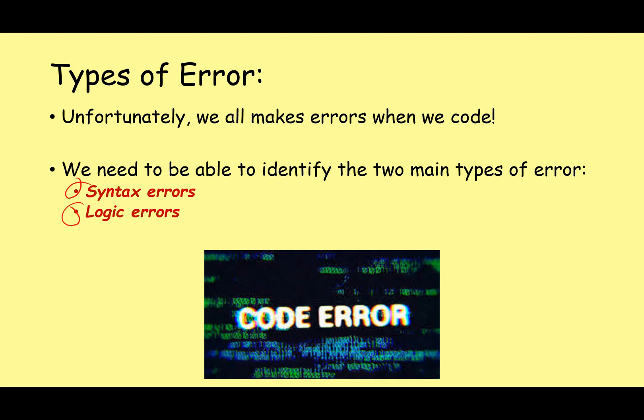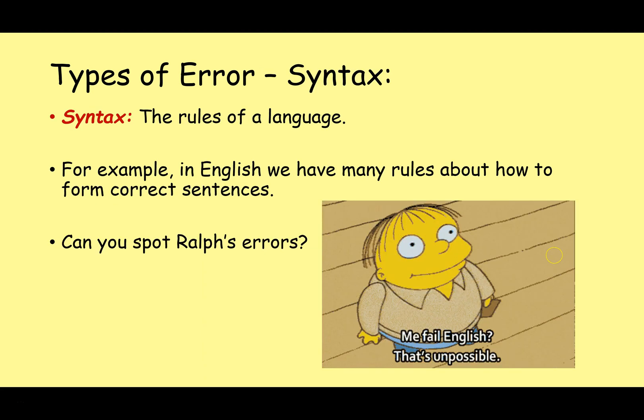Hopefully by the end of this video you'll know the difference between them and be able to spot both of them in code. Let's start with syntax errors. So what is syntax? Well, syntax just means the rules of a language. This doesn't have to be programming, it could be any kind of natural language. So for example, in English we do have many rules about how to form correct sentences. So here's my good friend Ralph, and Ralph's just said 'me fail English, that's unpossible.' So clearly we can spot that what he's saying is grammatically incorrect.